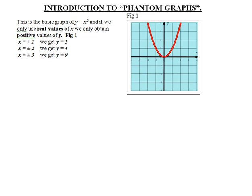This is the basic graph of y equals x squared, and if we only use real values of x, we only obtain positive values of y. If x equals plus or minus 1, we only get y equals positive 1, which is here and here.